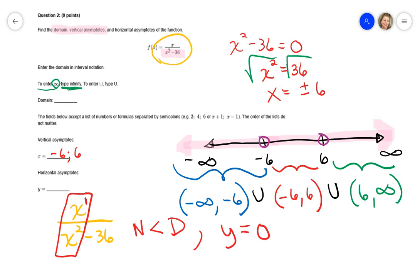Had it been the other way around, just so I can go over this, let's say you had an x squared over an x to the first. If it's like this, where the numerator is greater than the denominator, this is when it's undefined. Or you basically say there is no horizontal asymptote.